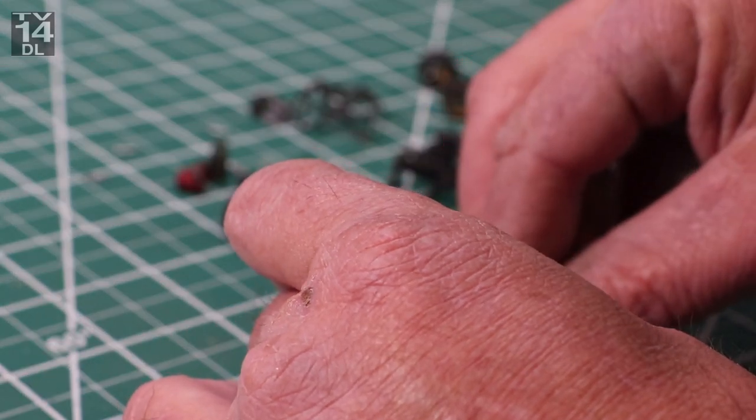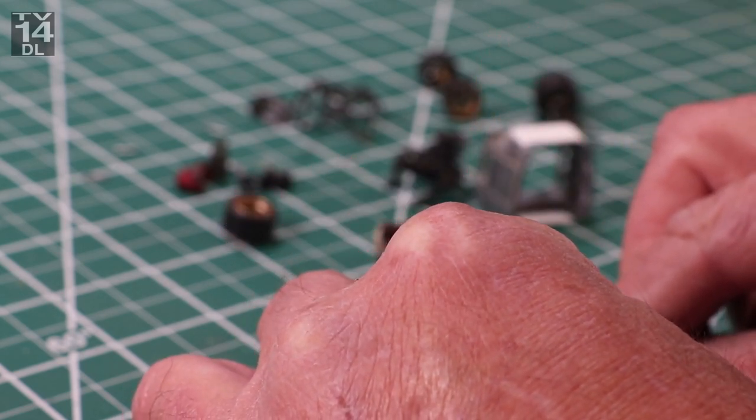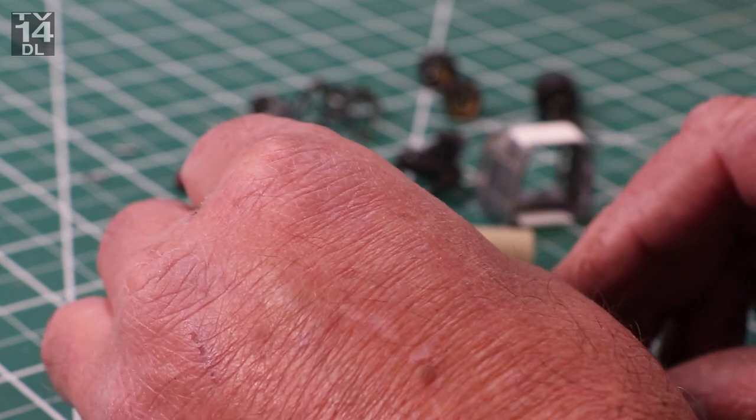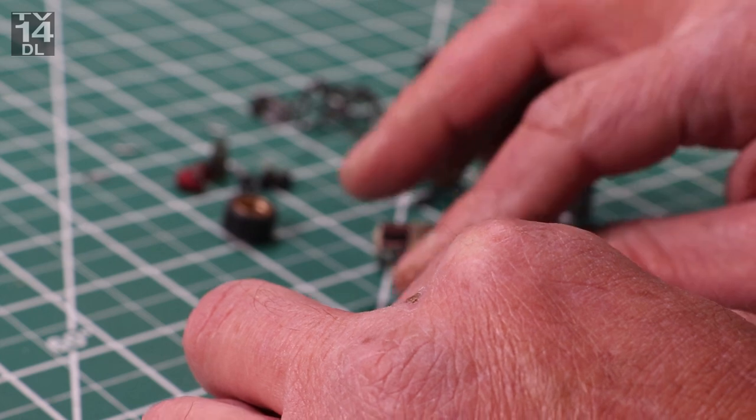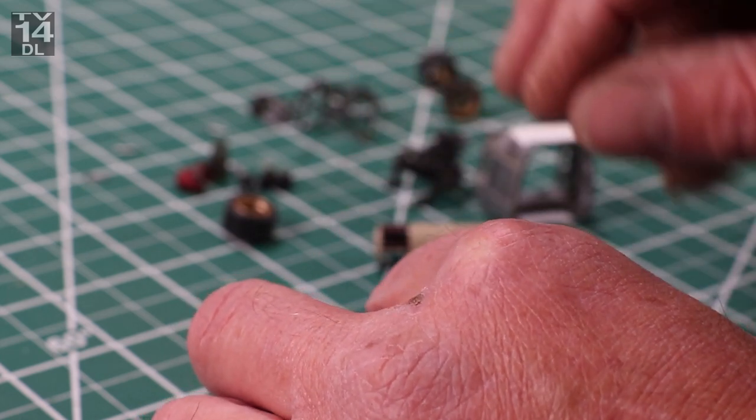But anyway, so I made a transmission tunnel. I cut out the floor. I made the tunnel itself out of, I want to say, quarter-inch styrene, and I trimmed it down to make it look like a tunnel so it was tapered. But when I went to put the motor in, obviously I had to do the firewall as well.